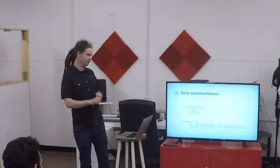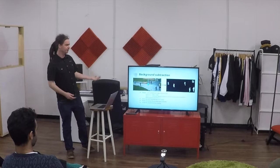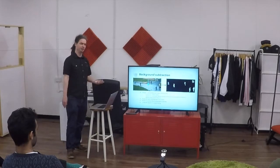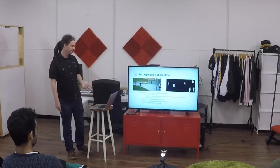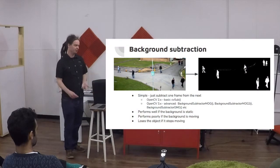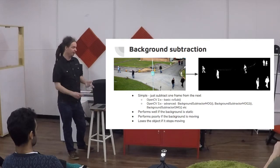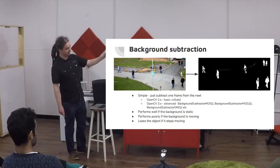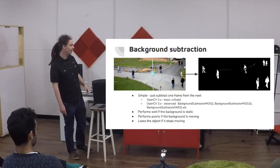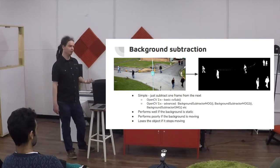The original versions used background subtraction. In OpenCV 2.x it's simply done with cv_sub, which literally subtracts one image from another. In 3.x there are multi-variant versions but they do essentially the same thing — take an image and, based on movement, convert it into a motion mask. It performs really well on a static background, but poorly if the background is moving, and if the object stops moving you lose it too.